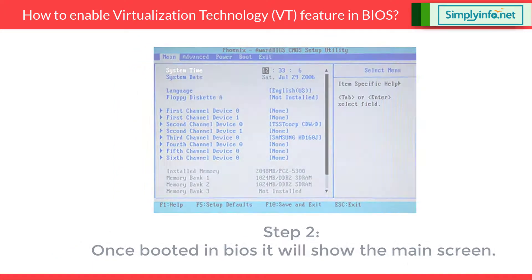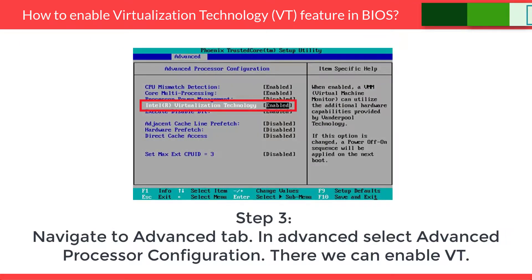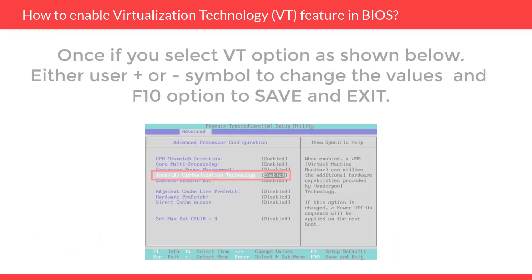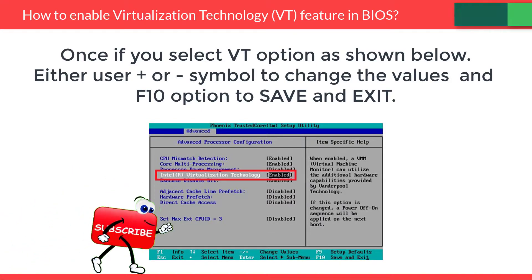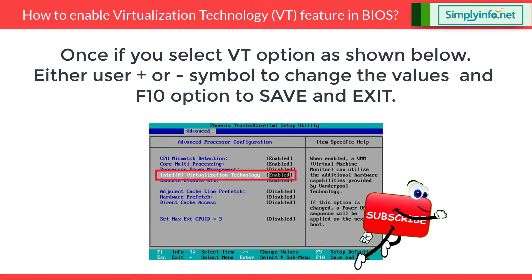Step 3: Navigate to the Advanced tab. In the Advanced tab, select Advanced Processor Configuration. There, we can enable the VT option. Once you select the VT Technology option as shown, use the plus or minus symbol to change the values, and F10 to save and exit.